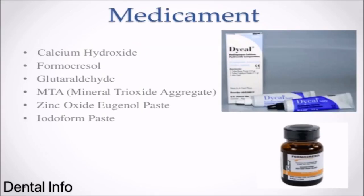Medicaments used in Apexogenesis include: Calcium hydroxide, Formocresol, Glutaraldehyde, MTA (Mineral Trioxide Aggregate), Zinc oxide eugenol paste, and Iodoform paste.